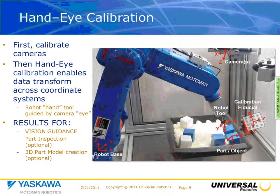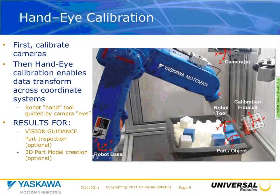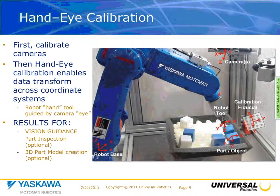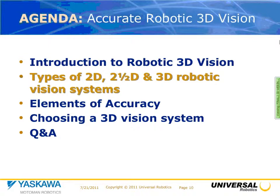I mentioned intrinsic camera calibration. For robotic vision, you add hand-eye calibration. Hand refers to the robot tool and eye refers to the camera. You calibrate the cameras first, then calibrate between the two, performing a transformation of information across coordinate systems. Once you've done that, you have the results necessary to do vision guidance or part inspection. That's an introduction to robotic vision and how it differs from standard 3D vision.